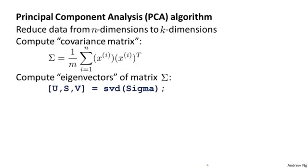Here's the procedure. Let's say we want to reduce the data from n-dimensional to k-dimensional. First, compute something called the covariance matrix, commonly denoted by the capital Greek letter sigma. It's a bit unfortunate that sigma looks exactly like the summation symbol — this is the Greek letter sigma used to denote a matrix, while this here is a summation symbol — so hopefully it'll be clear from context which one I'm using.